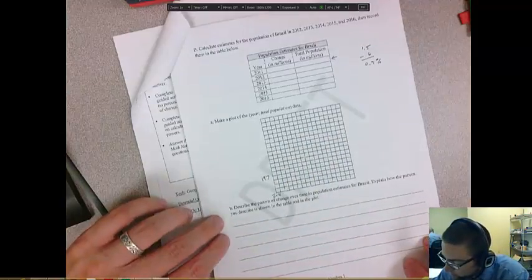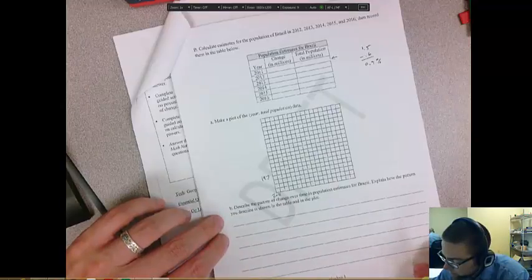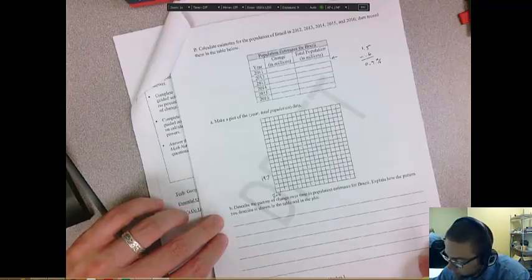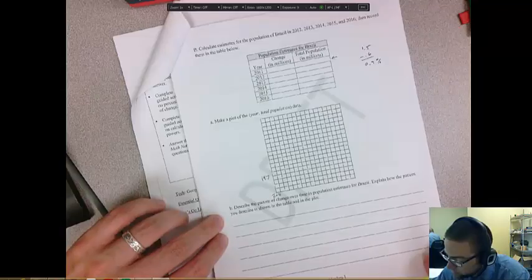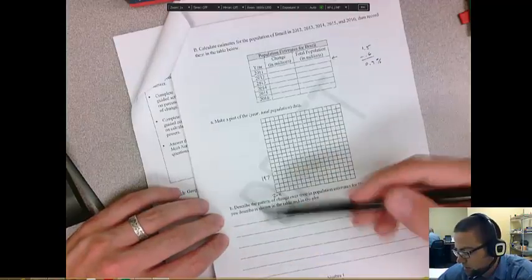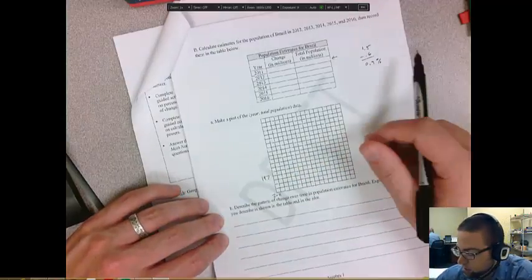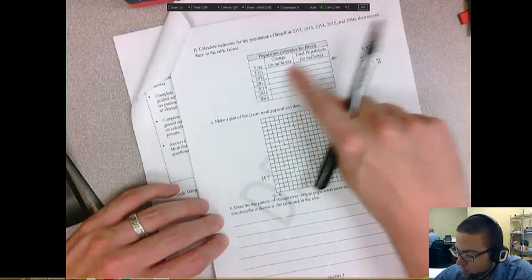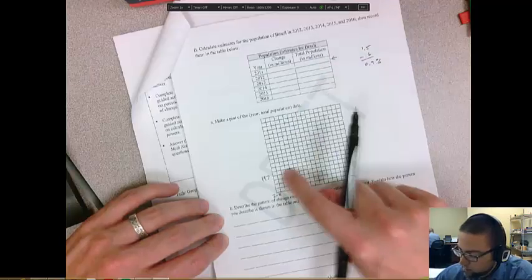So you might start around there, and then it goes up from there. Okay, describe the pattern of change over time in population estimates for Brazil. Explain how the pattern you describe is shown in the table and in the plot. So that's just kind of a qualitative thing. You just say what's happening here and what's happening here.